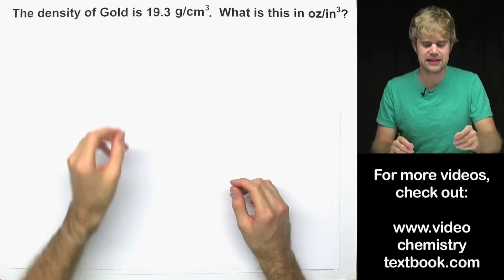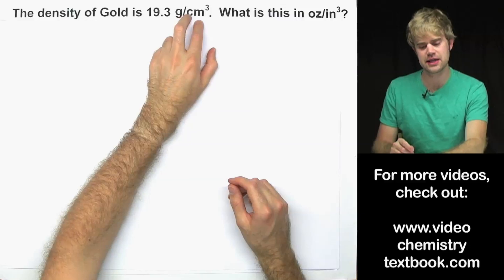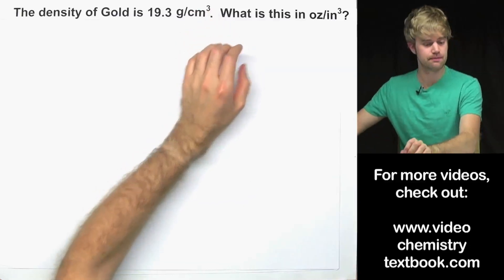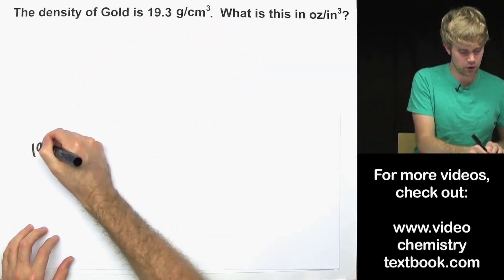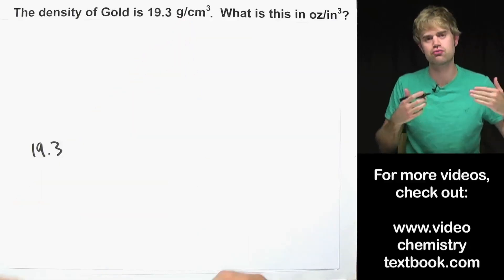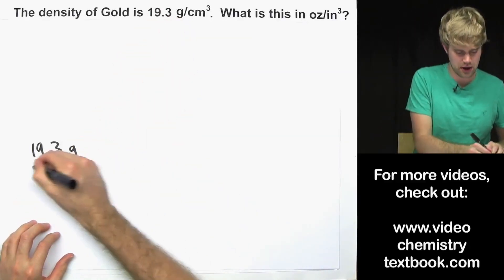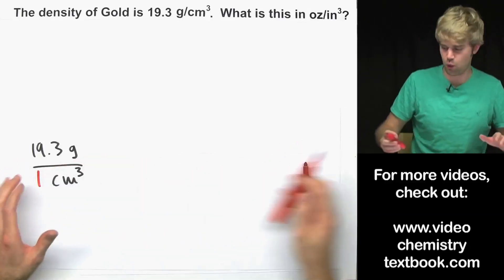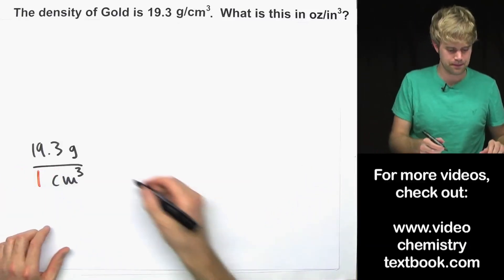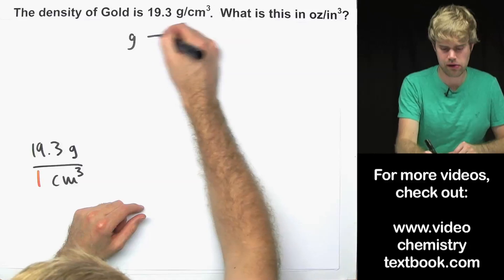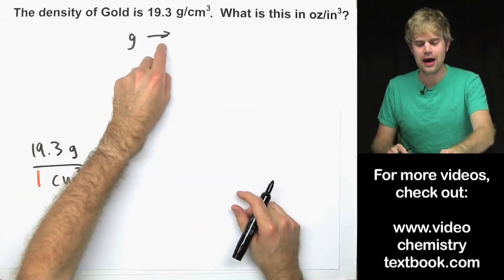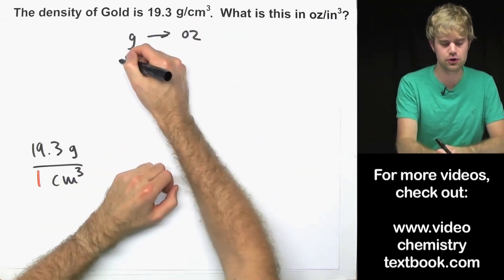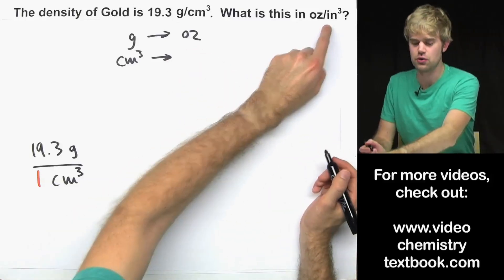The density of gold is 19.3 grams per cubic centimeter — that's the same as centimeters cubed. What is this in ounces per cubic inches? So 19.3 grams per centimeter cubed has a top and a bottom. We write it as 19.3 grams divided by 1 centimeter cubed. Now I have grams as my unit of mass and I'm going to convert that to ounces, and I also want to go from cubic centimeters into cubic inches.